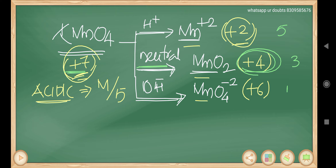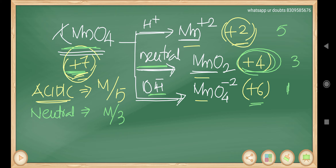In basic medium, the change is going to be 1. So in neutral or weakly basic medium, the equivalent mass is molecular mass divided by 3. In basic medium, the change is from +7 to +6 — a change of 1 — so the equivalent mass equals molecular mass divided by 1.